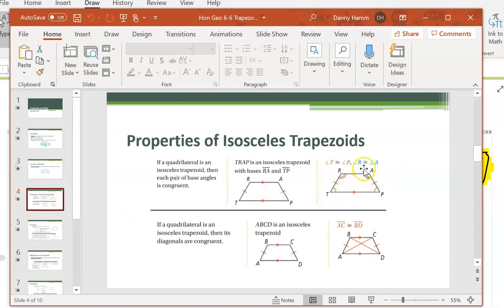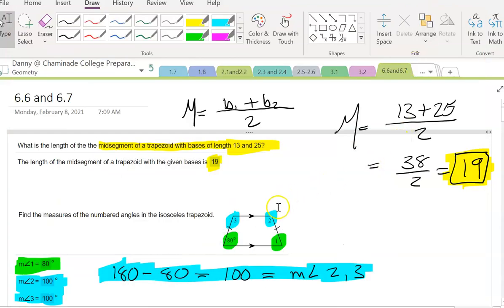These base angles that are on the upper base and lower ones would be congruent to each other, and in relation to the ones that are not congruent, they are supplemental, so their sum is equal to 180. And we also know that these diagonals are congruent to each other, and so we're going to be using these characteristics to solve these things, and so here we're looking to find the mid-segment.